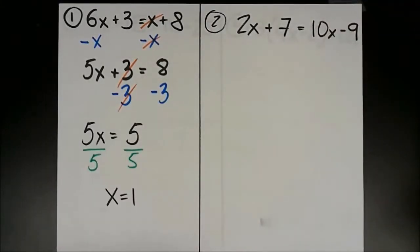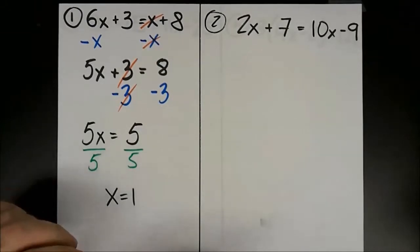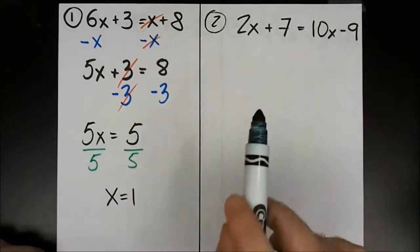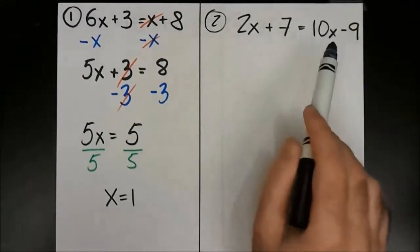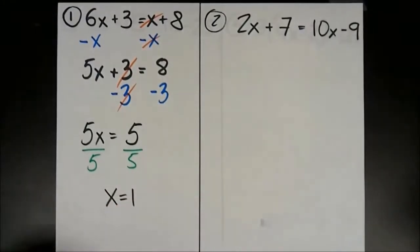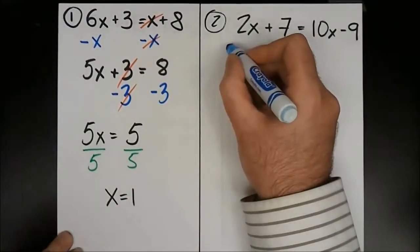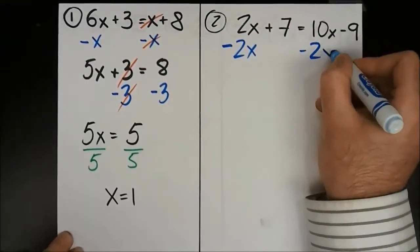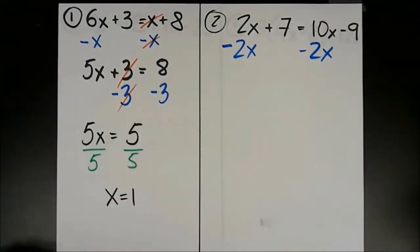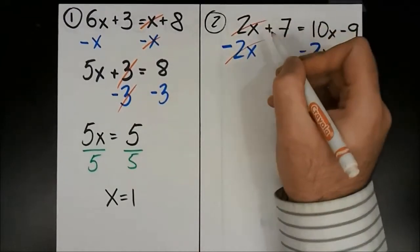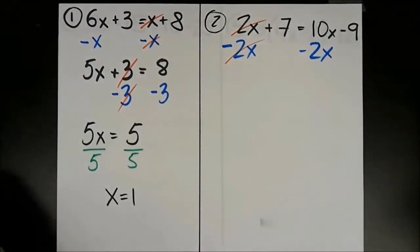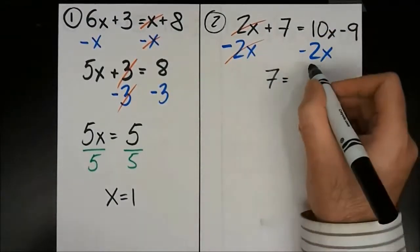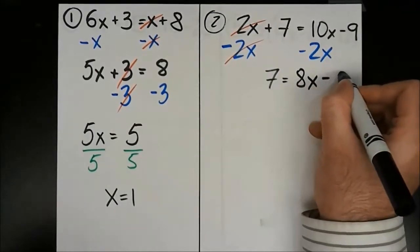Number 2 is the same type of problem. I have 2x on this side and 10x on this side. I want x on only one side, so I've got to get rid of one of them. I choose the smaller one. How do you get rid of a 2x? You subtract 2x from both sides. These cancel out, leaving a positive 7. 10x minus 2x is 8x minus 9.